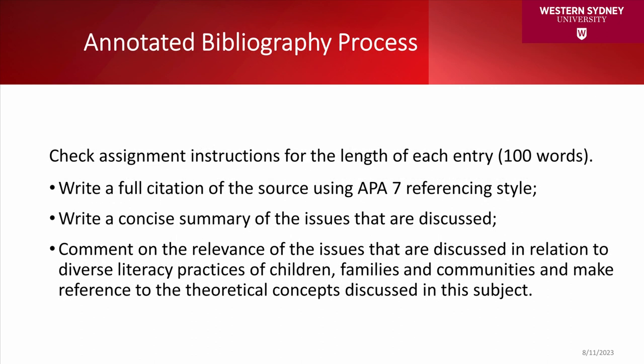When writing the annotated bibliography, you need to first write a full citation of the source using APA 7 referencing style. You should write a concise summary of the issues that are discussed in the text, then comment on the relevance of those issues in relation to diverse literacy practices of children, families, and communities, and make reference to the theoretical concepts discussed in this subject.